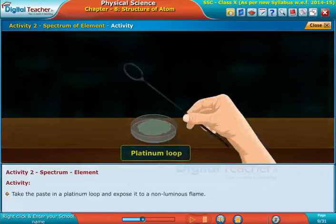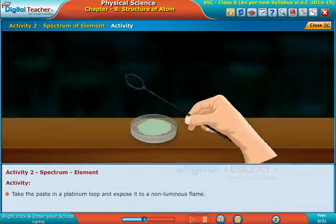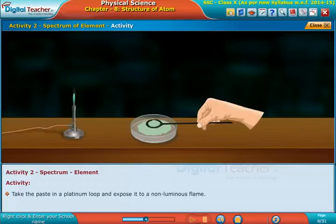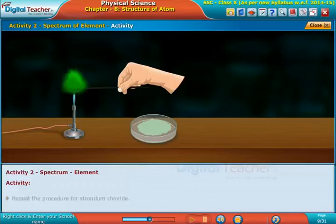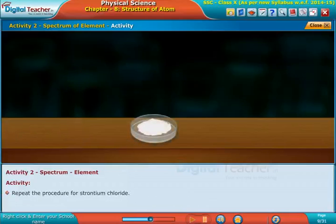in a platinum loop and expose it to a non-luminous flame. Repeat the process for strontium chloride.